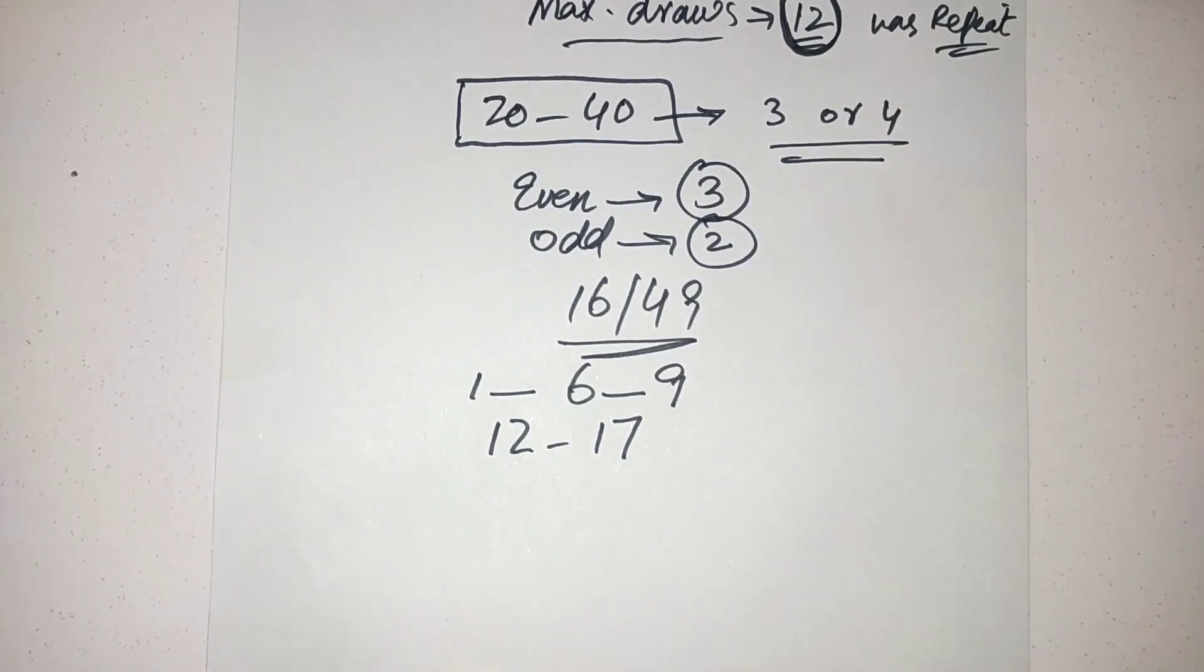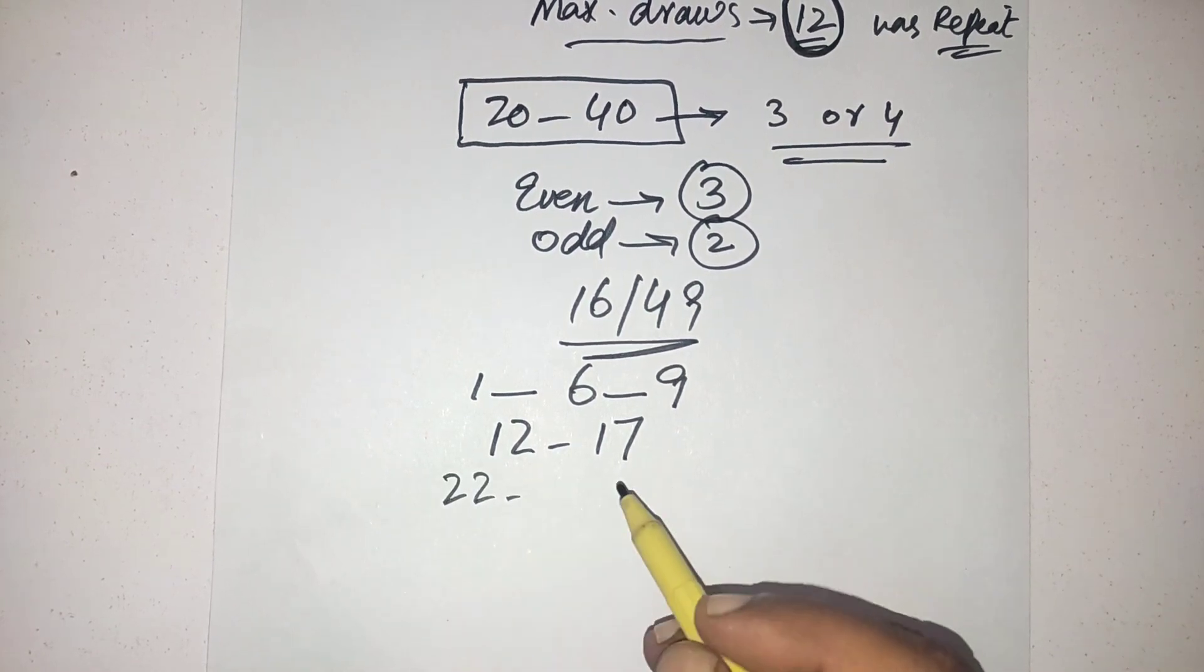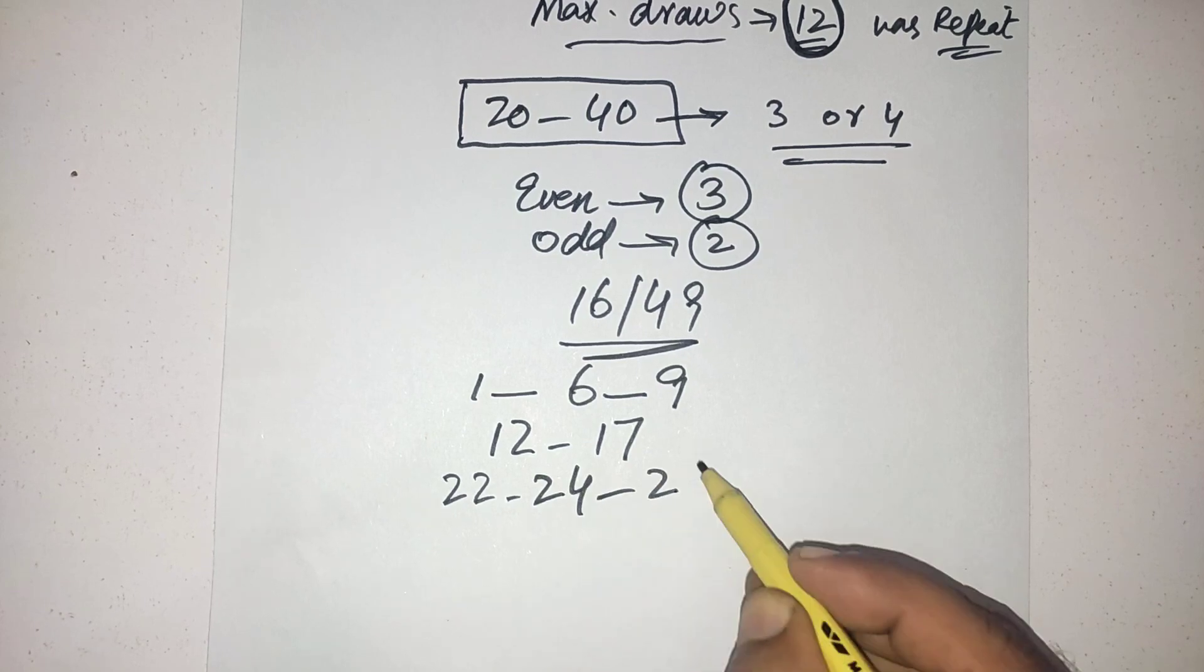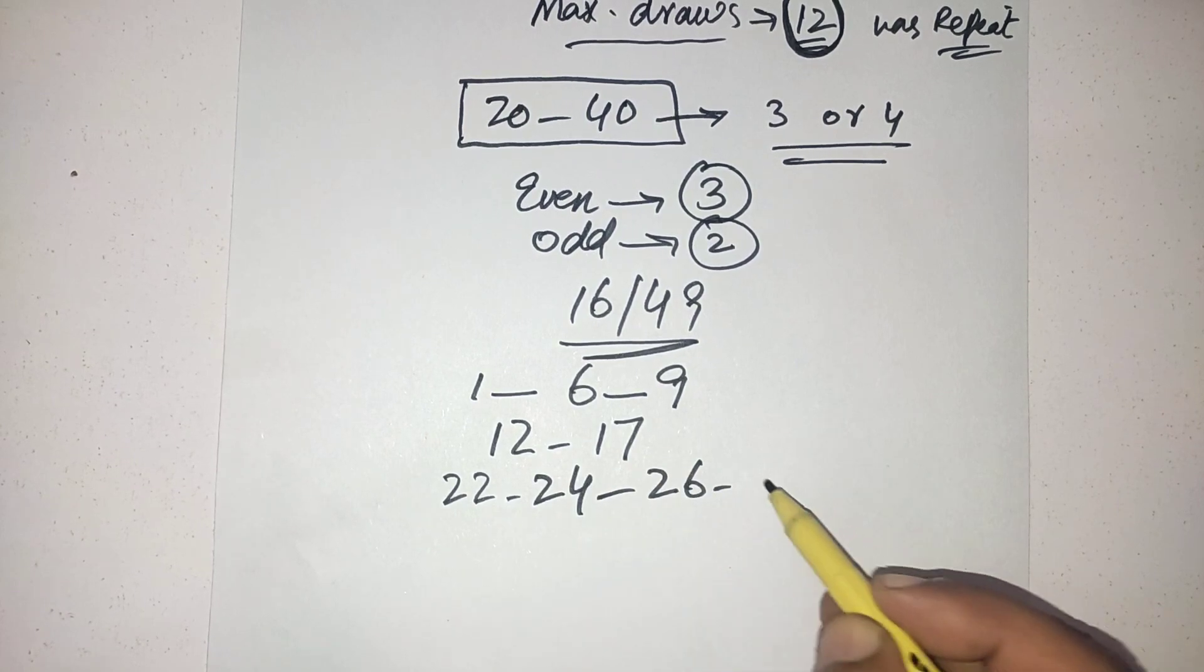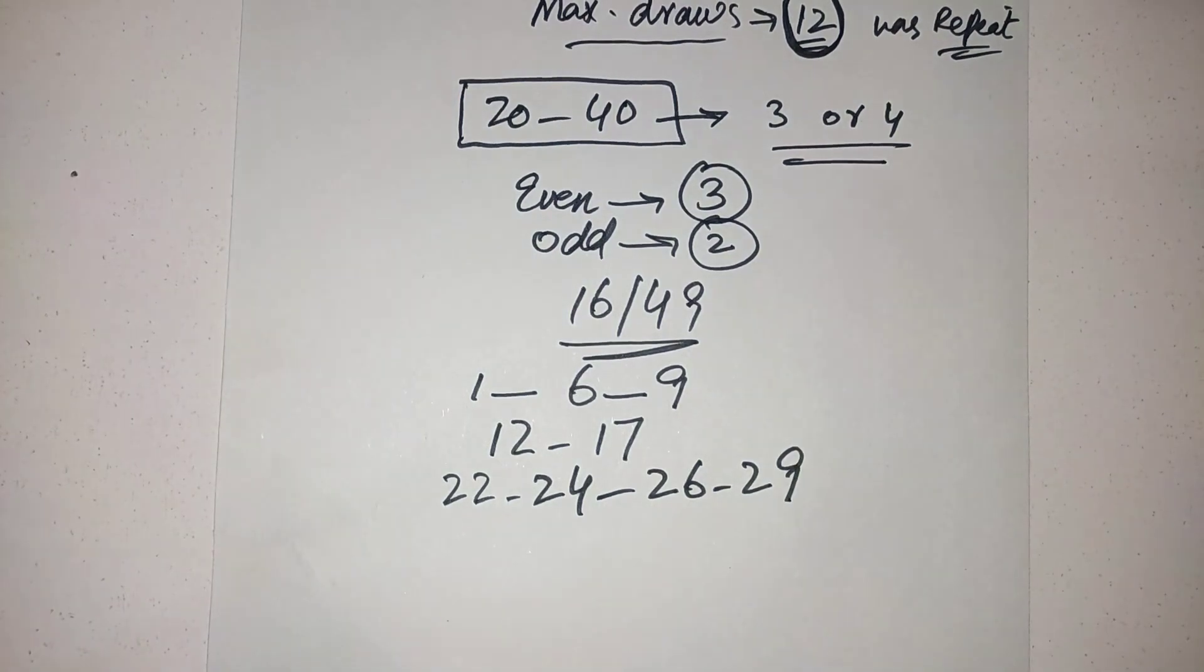And from 20 to 29 I have four numbers: 20, 24, 26, and 29. From 30 to 39 I have three numbers: 36, 37, and 38.